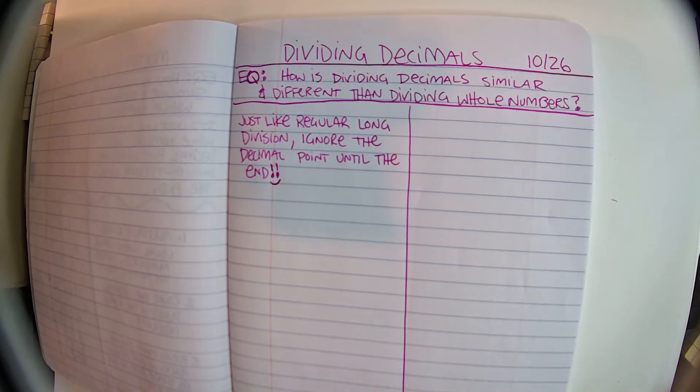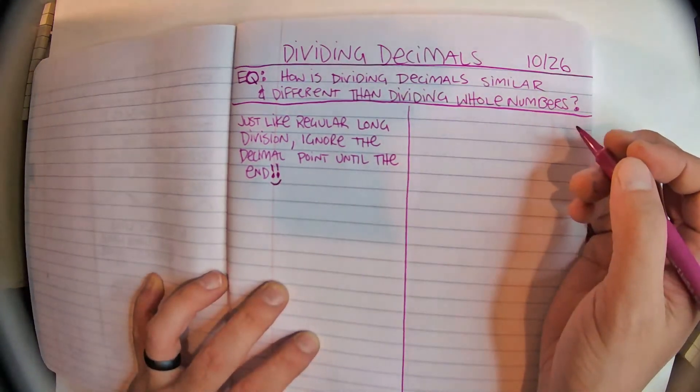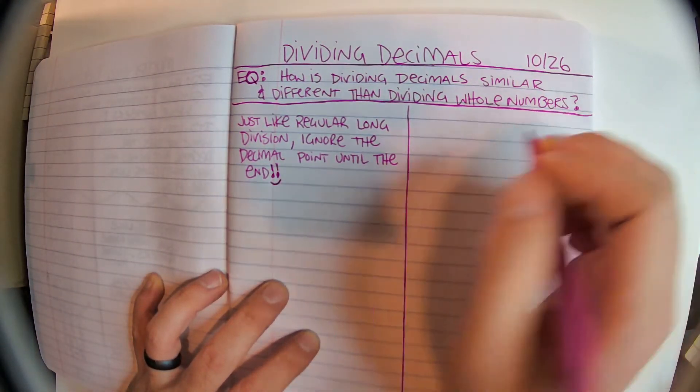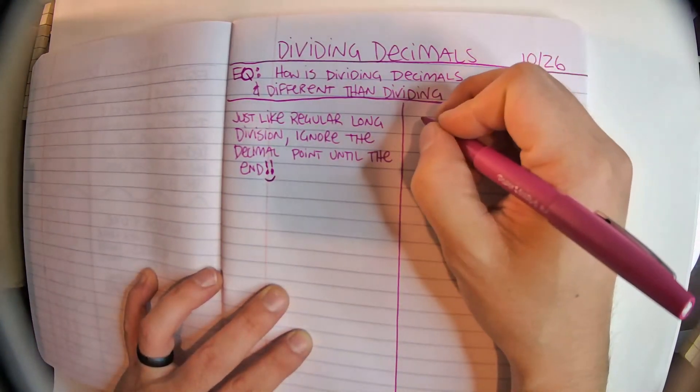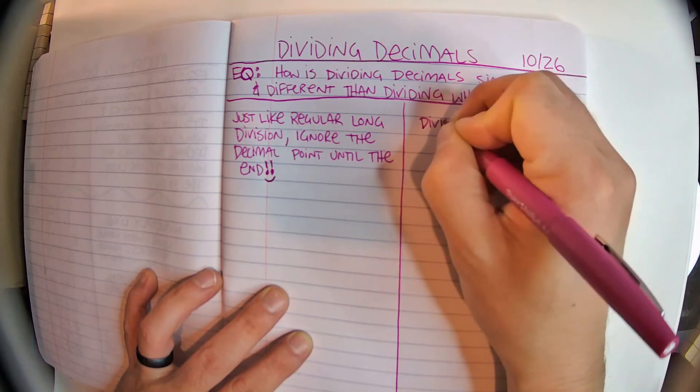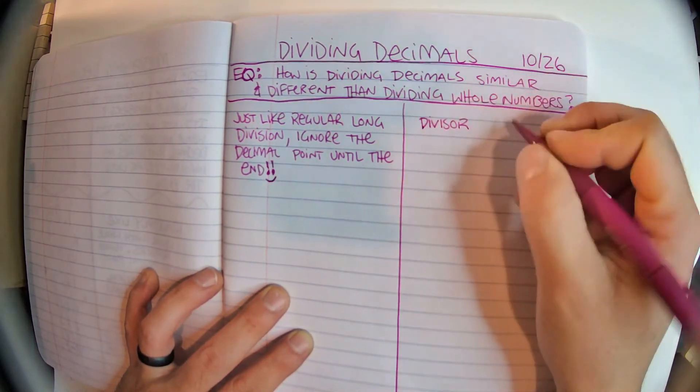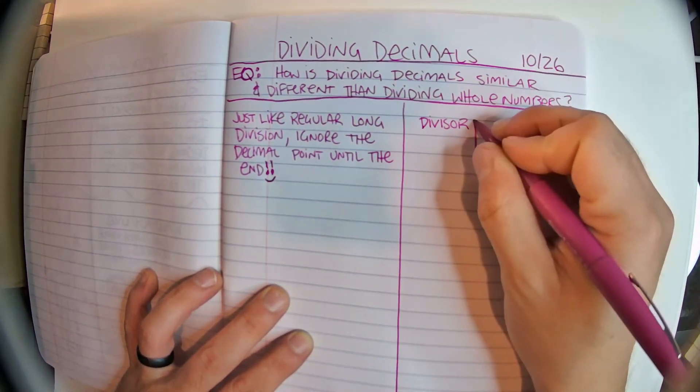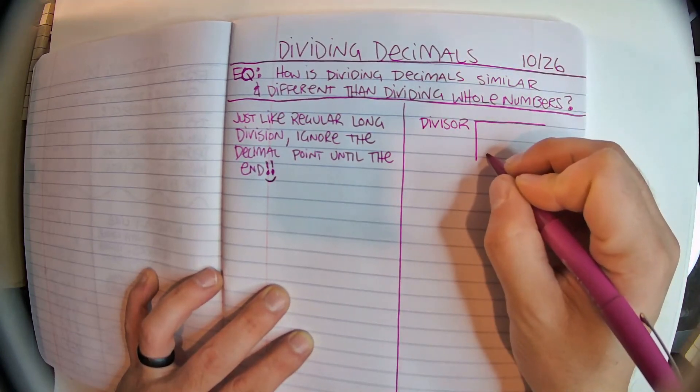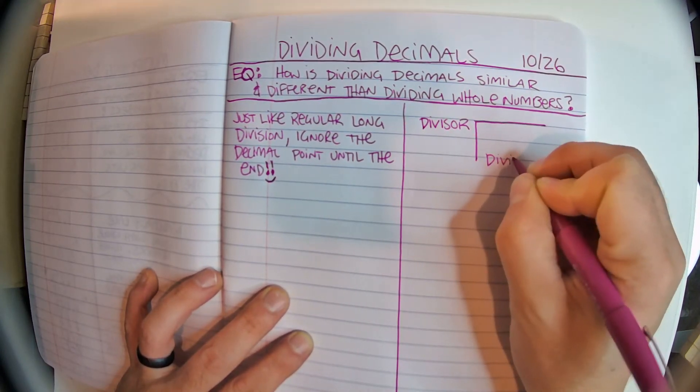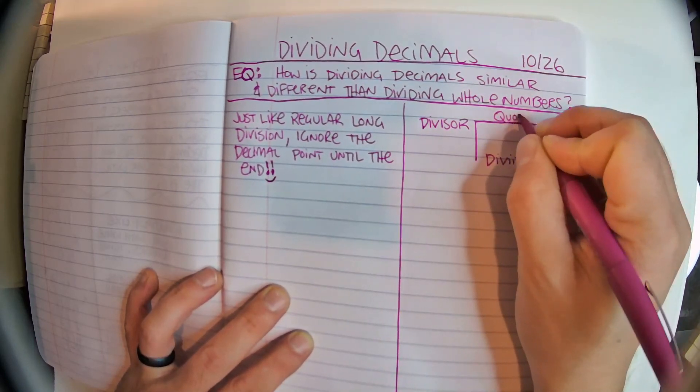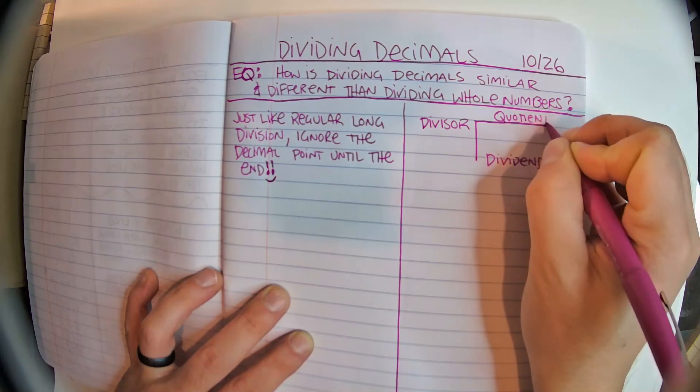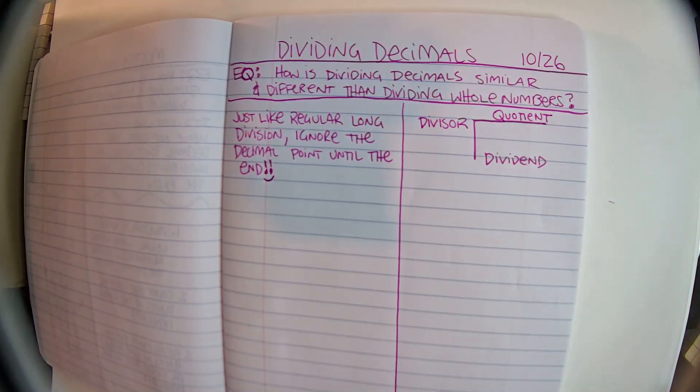All right. So, let's set up a problem. So, the first thing, remember, we're going to have our divisor on the outside of the house, our dividend on the inside of the house, and our quotient will be the number or the answer on top. Come back to the next video, and let's check it out.